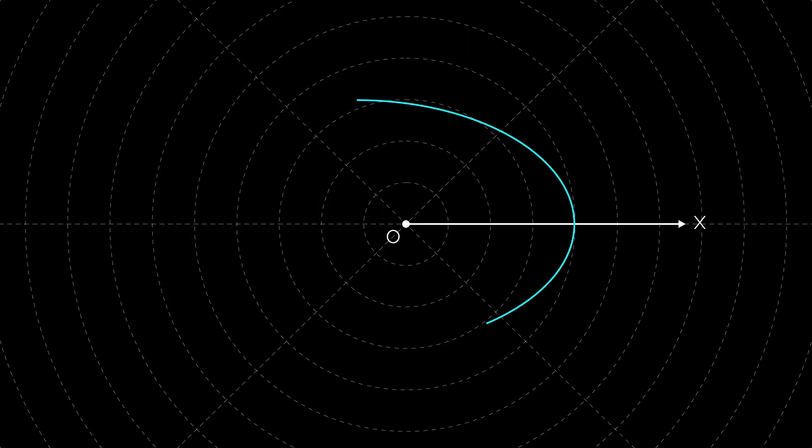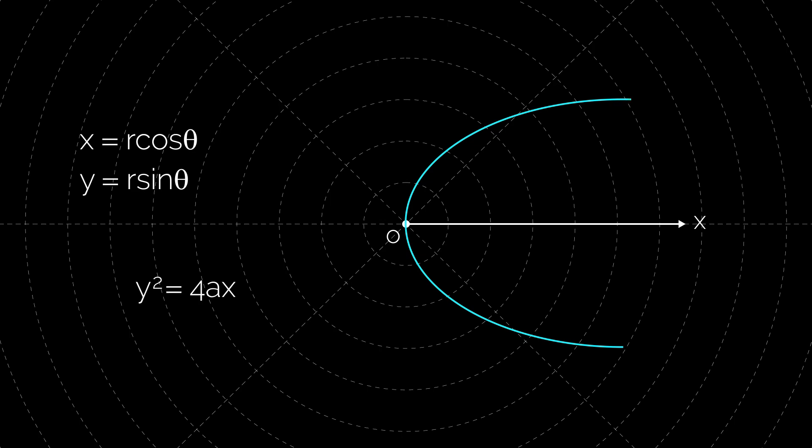The polar equation of a conic can be found by putting x equal to r cos θ and y equal to r sin θ. For example, the equation of a parabola is y² = 4ax. Now put x = r cos θ and y = r sin θ, we get r sin² θ = 4a cos θ.